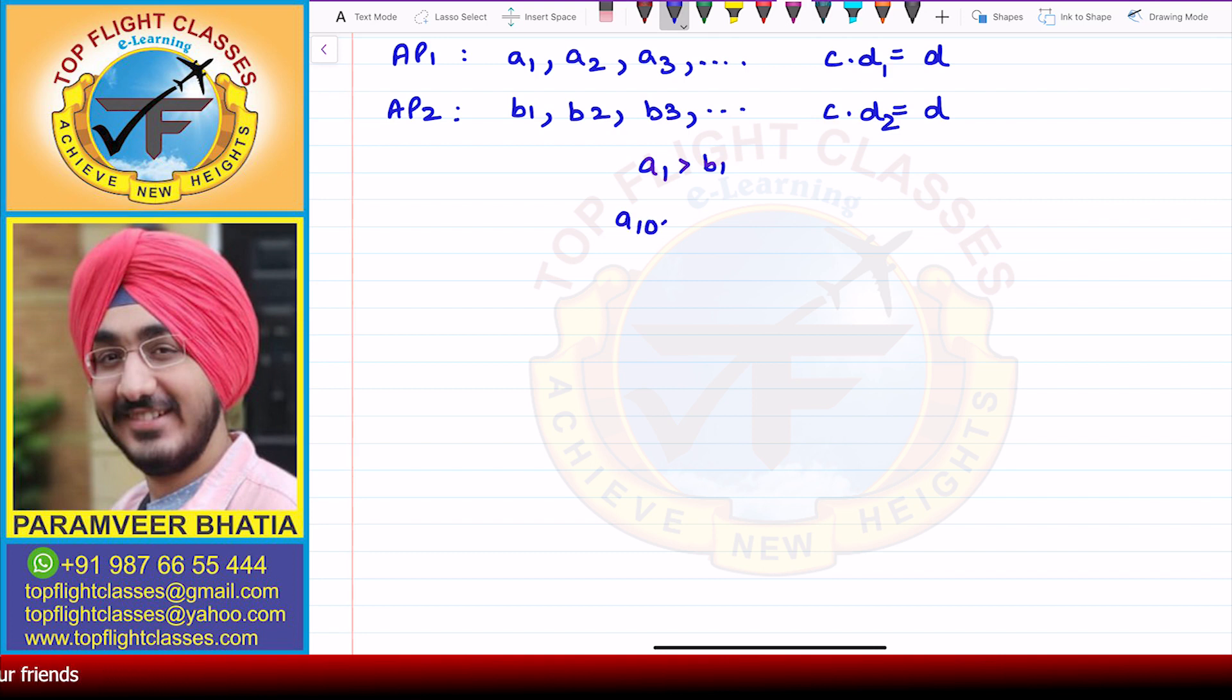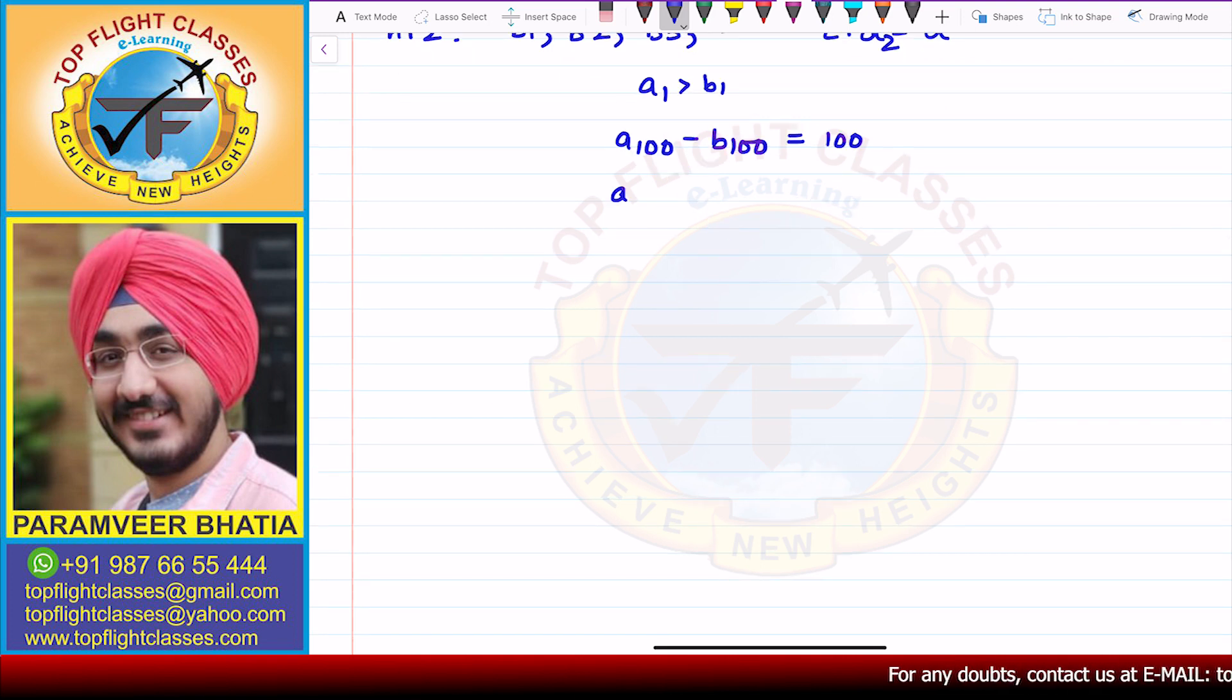So we have A100 minus B100. The difference between the 100th terms is equal to 100. Now if we write the formula, An is equal to A plus (N minus 1) times D. So if we write this A100,